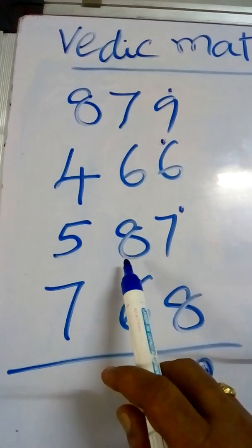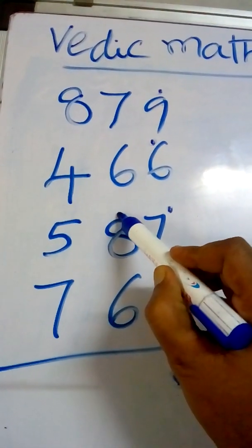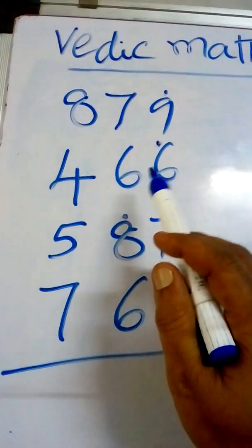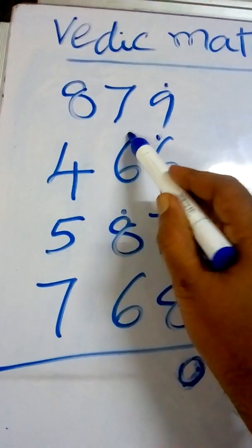9 plus 8 is equal to 17. 17 means put 1 dot here, 10th place. And 7 is in 1's place. 7 plus 6 is equal to 13. 13 means put 1 dot here. And 3 carry on.